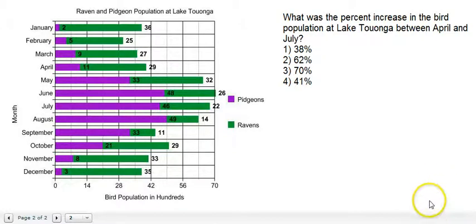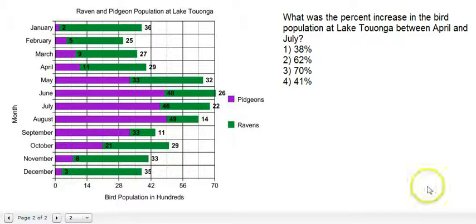Hi, this is Damon Tennant with the Get Your GED Now test preparation series coming at you with another percent problem. On the GED test, you're going to see some problems that have multiple questions referring to the same picture. So we're going to, one more time, use the raven and pigeon population at Lake Taronga.